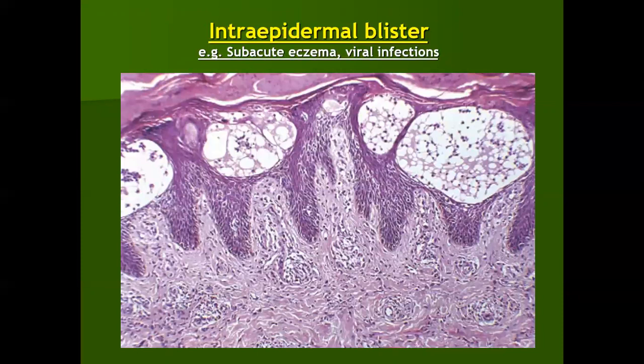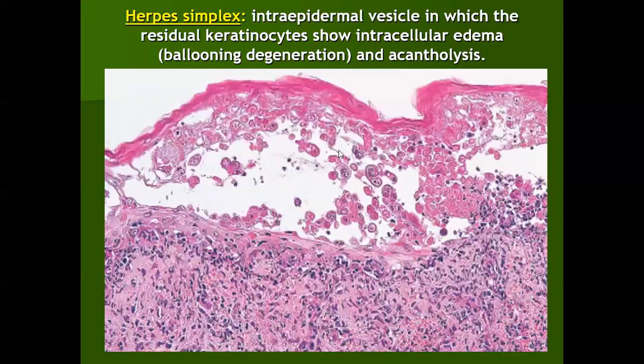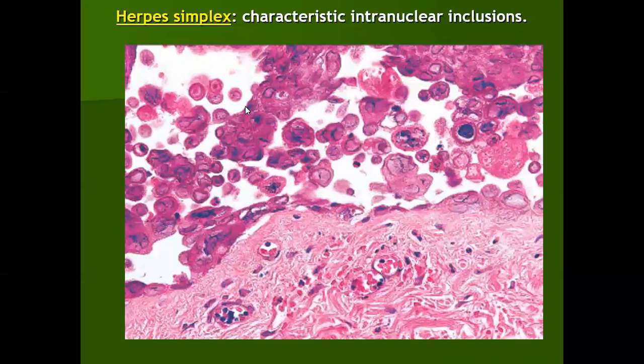Intraepidermal blisters seen purely within the epidermis with surrounding spongiosis are typical of acute eczema and viral infections. In viral infections, in addition to blisters, there will be typical keratinocyte giant cells, balloon degeneration of keratinocytes with loss of the keratinocyte, acantholytic cells, and giant cells derived from keratinocytes. Viral inclusion bodies can be seen within these cells as intranuclear inclusion bodies.